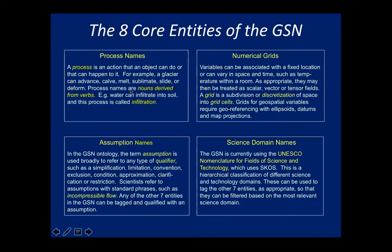Then there's the numerical grid — you need to know how you discretized space for both data sets and models. There are assumption names, which can be used as decorators throughout to add additional information. And science domain names help with filtering — when showing somebody a large collection, we can show just the hydrology terms or some subset. We have geostandardnames.org with multiple cross-linked domain names, and you can see some of what's there so far on that page.